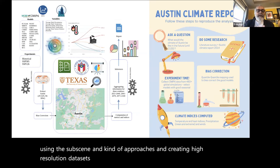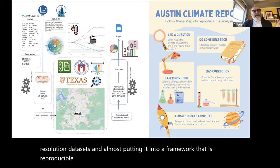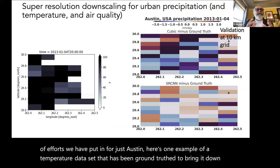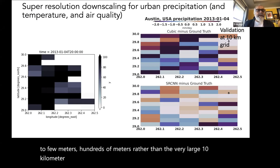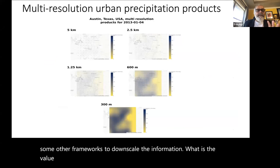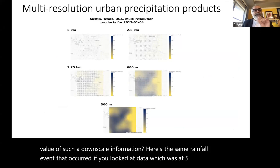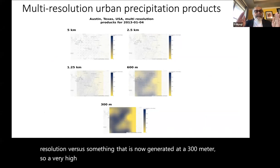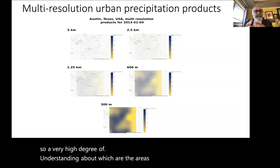We are also applying this to future climate projections. Manmeet has been developing Austin's future climate projections using CMIP6 climate output — 50+ simulations at 100 km × 100 km grids — and bringing them down to very local scale so city managers can make decisions. This work using SR-CNN approaches creates high-resolution datasets in a reproducible and usable framework. Here's a temperature dataset brought down to hundreds of meters versus the 10 km grid, showing much richer spatial detail.